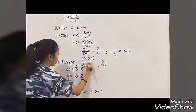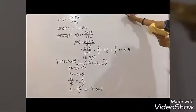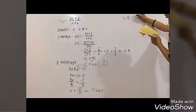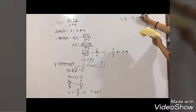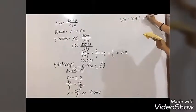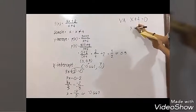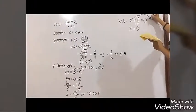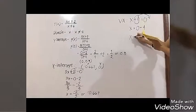The vertical asymptote is where the denominator is 0. To get this, simply equate the denominator to 0. So x plus 4 equals 0. When you transpose 4 to the other side, that becomes negative. So x equals negative 4 is the vertical asymptote.